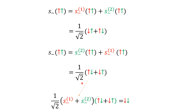Now, when the lowering operator acts again on the state (1/√2)(|↓↑⟩ + |↑↓⟩), we apply S₋₁ and S₋₂. The result is that both particles come down, giving the |↓↓⟩ state. The normalization constant becomes 1, since both are in the down state.